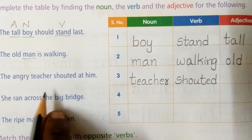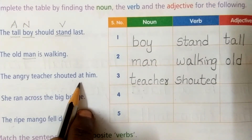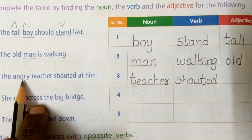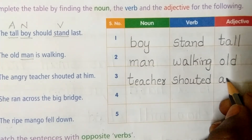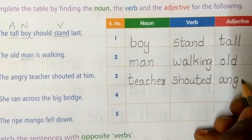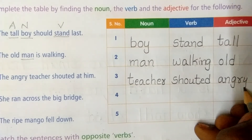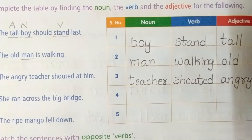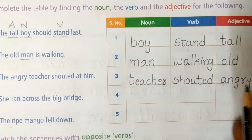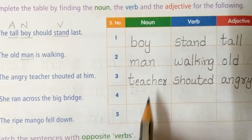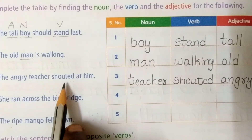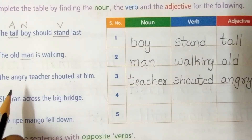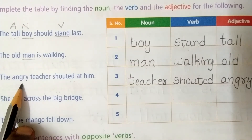Next, what is the adjective here? Angry. Angry is the adjective word. Write down 'angry' — A-N-G-R-Y. So, noun is teacher, verb is shouted, and angry is adjective.